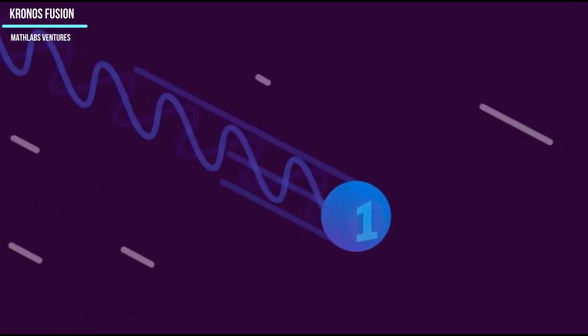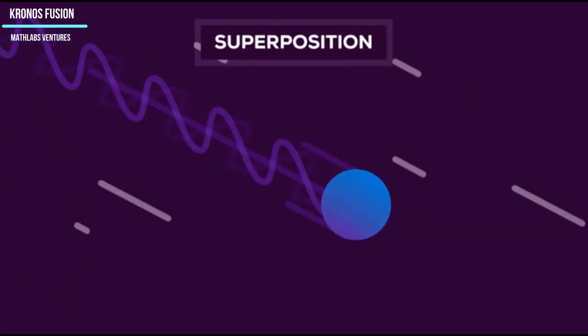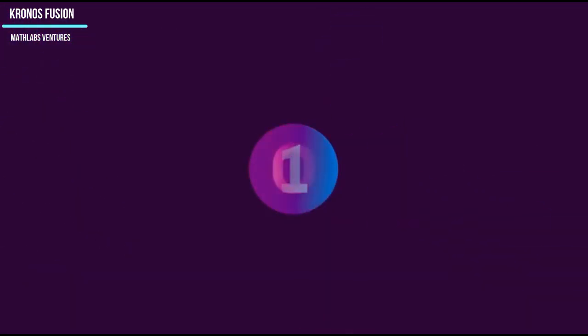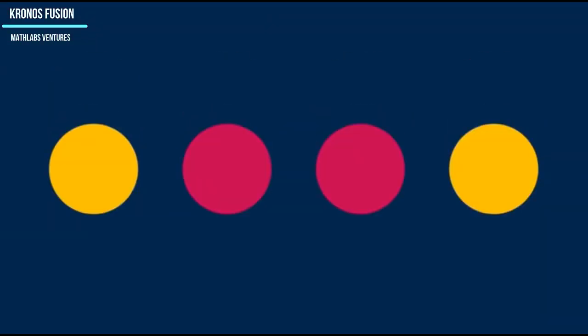From prediction to control, the next step at Kronos Fusion is our deep learning code. This opens possible pathways for not only predicting but controlling disruptions.